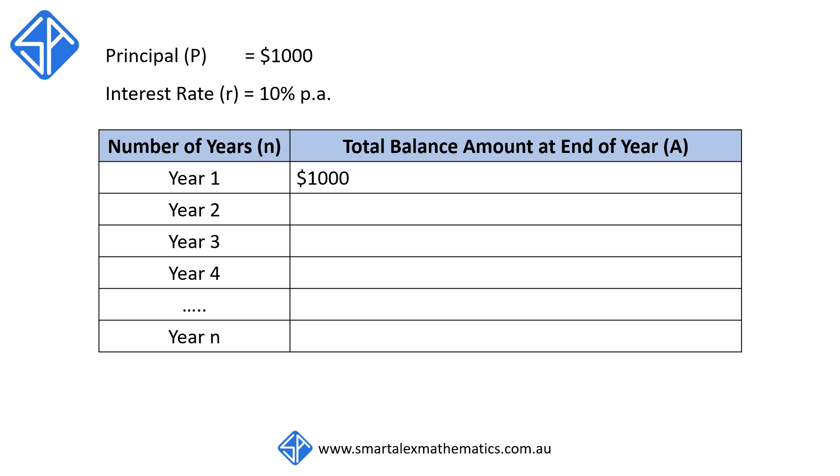In year one, we start off with $1,000 and this $1,000 is going to increase by 10%. This is equivalent to 1,000 times 1.1, and this is our balance at the end of year one.